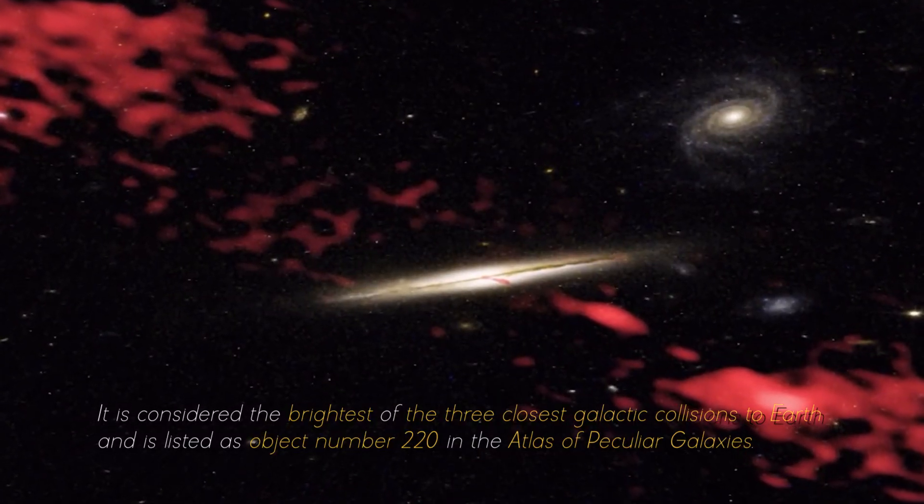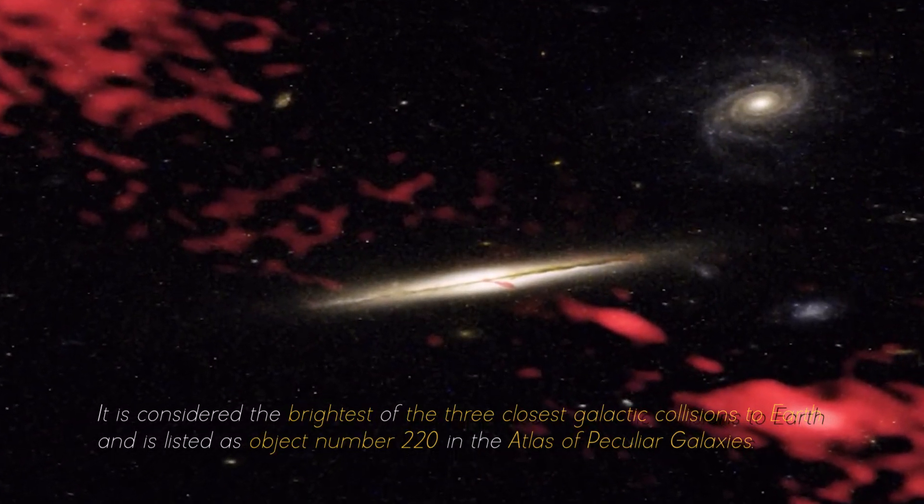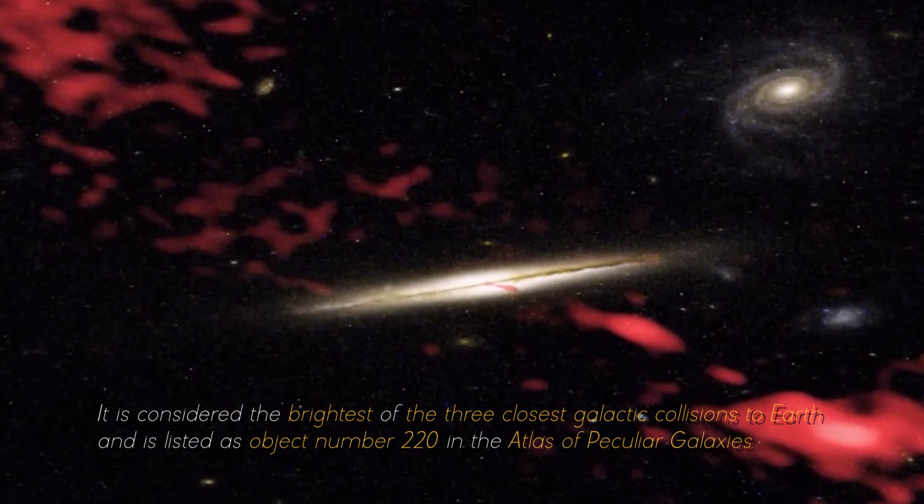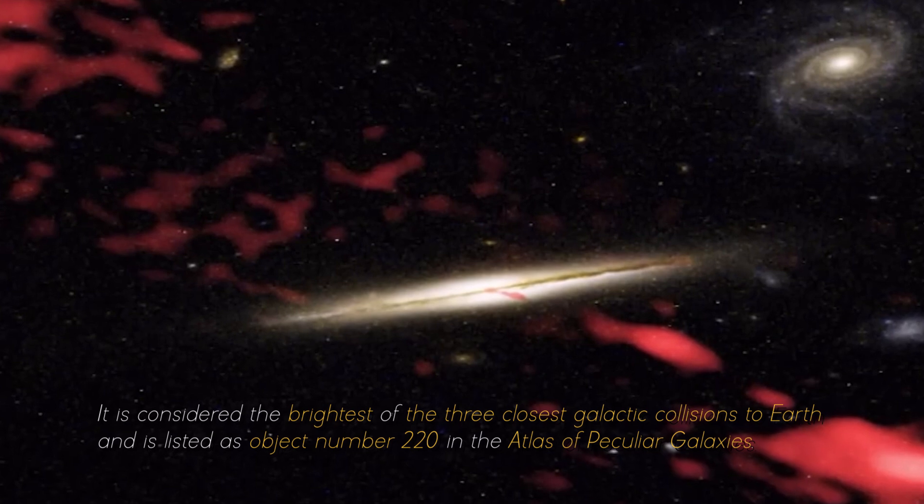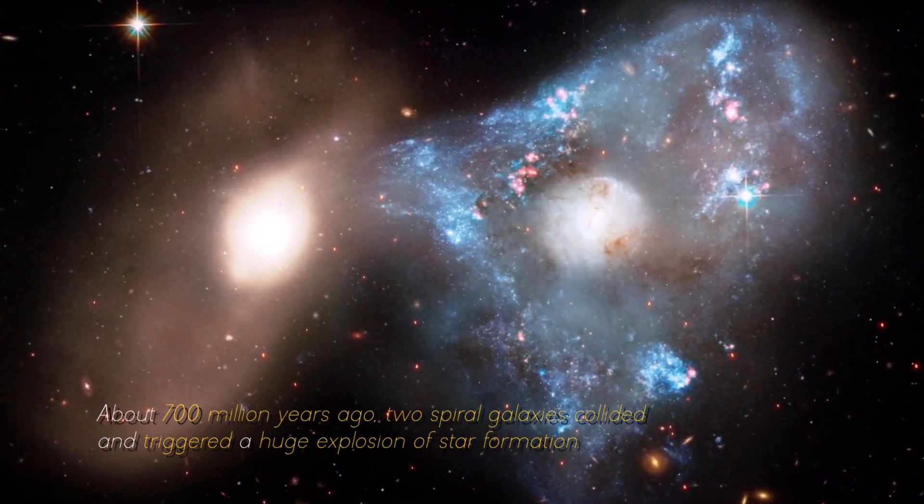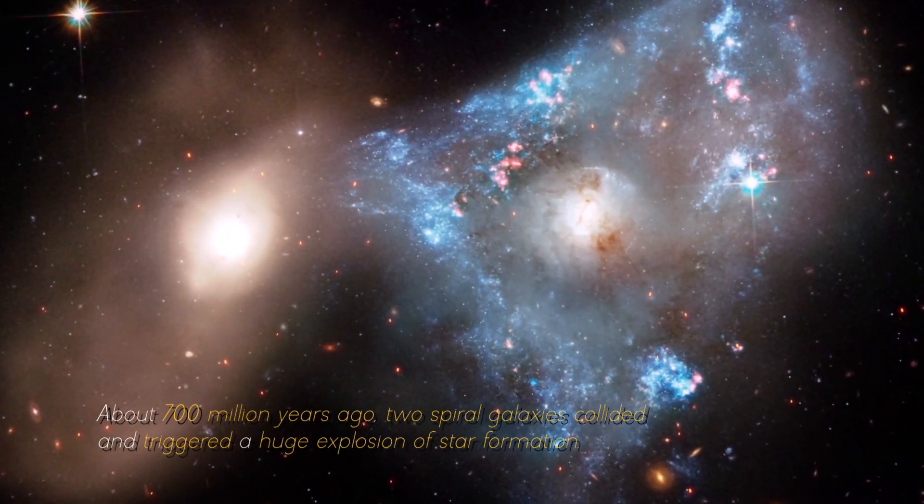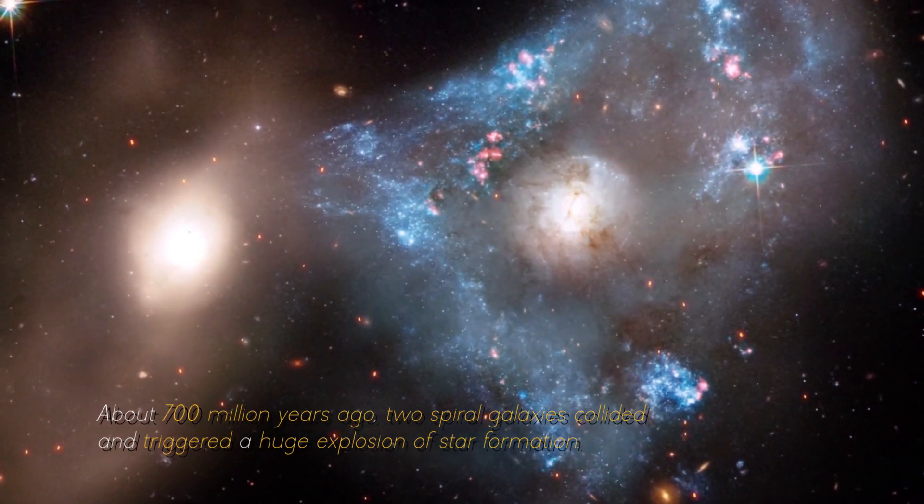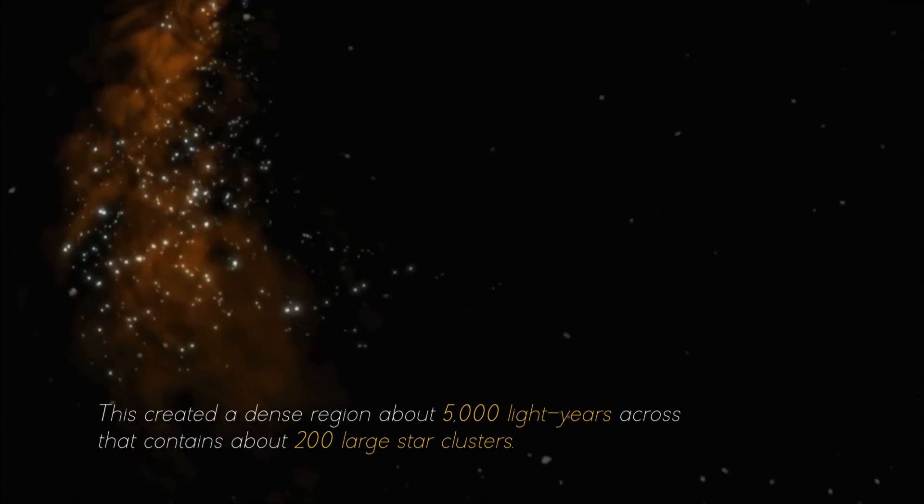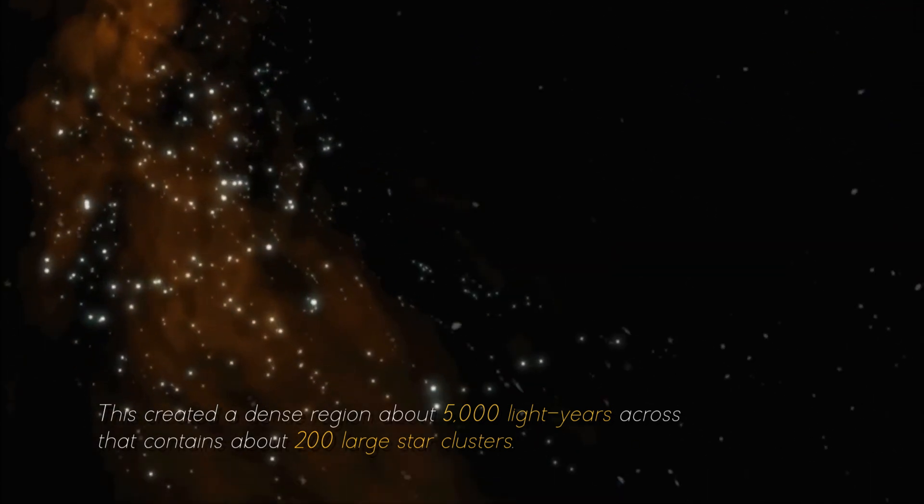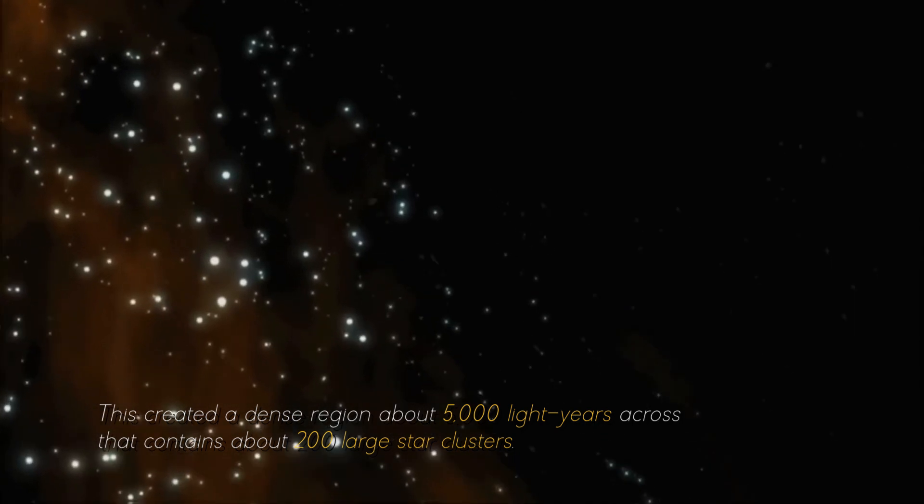It is considered the brightest of the three closest galactic collisions to Earth, and is listed as object number 220 in the Atlas of Peculiar Galaxies. About 700 million years ago, two spiral galaxies collided and triggered a huge explosion of star formation. This created a dense region about 5,000 light-years across that contains about 200 large star clusters.